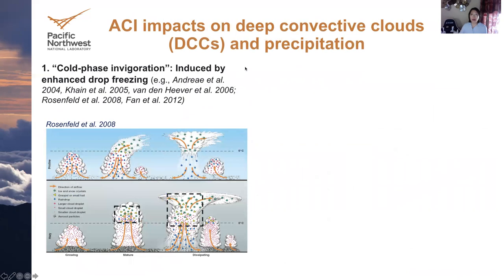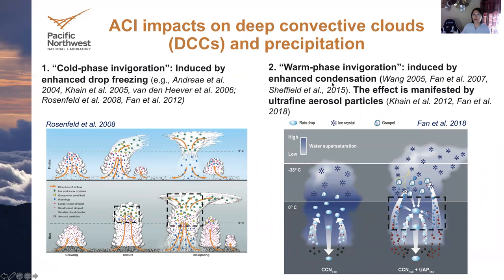Now the ACI impact on deep convective clouds. The cold-phase invigoration mechanism has received a lot of attention in the past decade — mainly through freezing an extra amount of liquid due to suppression of warm rain, inducing more latent heating. We also see warm-phase invigoration, actually stronger warm-phase invigoration in deep convective clouds compared with shallow clouds. This effect can be manifested by ultrafine aerosol particles, which have drawn a lot of attention recently because they are high in number, can be activated inside clouds where supersaturation is high in deep convection, and this effect is very large.